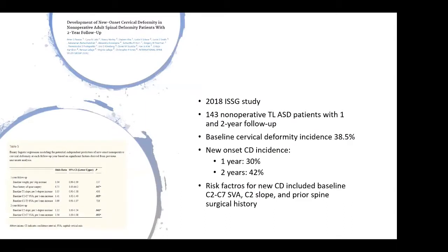A 2018 ISSG study looked at 143 non-operative thoracolumbar patients with one- and two-year follow-up. The baseline incidence of cervical deformity was around 40%. After one year, there was a new-onset incidence in patients who didn't previously have it of 30%, and by two years that was 42% for cervical deformity in non-operative patients. Risk factors for new cervical deformity included baseline high SVA, C2 slope, and prior spine surgery.